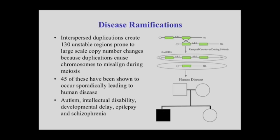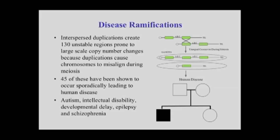This creates a huge amount of genetic diversity in our population, and as a result it also creates disease. When you remove entire swaths of five million base pairs containing six genes and only have one copy, it's not sufficient to properly develop. Years ago we identified 130 such regions, and we've systematically shown that about 45 of them are important in causing sporadic and inherited mutations as a result of this process. These affect diseases such as autism, intellectual disability, developmental delay, epilepsy, and schizophrenia. Our genome is predisposed to these diseases because of the architecture that has evolved.